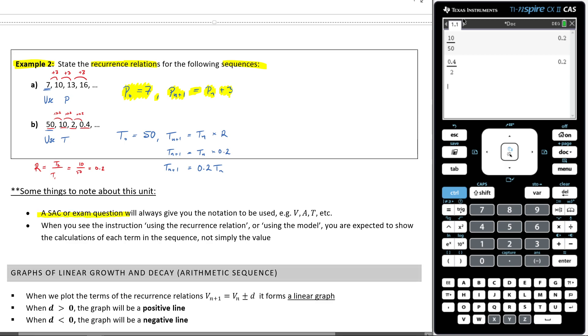A SAC or exam will always give you the notation to be used. So example, VAT. So what's that referring to is you see here, we used a P and here we used a T. In a SAC or exam, they'll tell you what it is that you should use. And then it says, when you see the instruction, use the recursion relation or using the model, you're expected to show the calculations of each term in sequence, not simply the value.